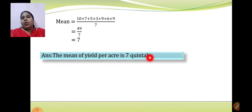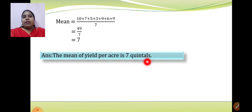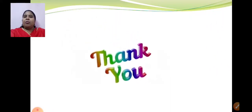Always have the habit of writing the formula, putting it in a box — presentation matters. Then substitution, then the answer, and then the final answer with the unit. Since this was yield per acre in quintals, write: mean of yield per acre is 7 quintals. In the next session we will continue with median and mode, and also one more method for mean when data is grouped. Complete your book till here. Thank you.